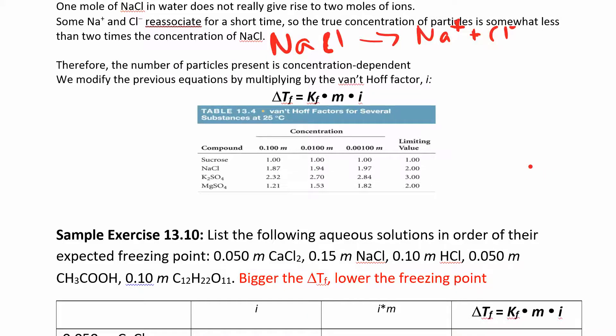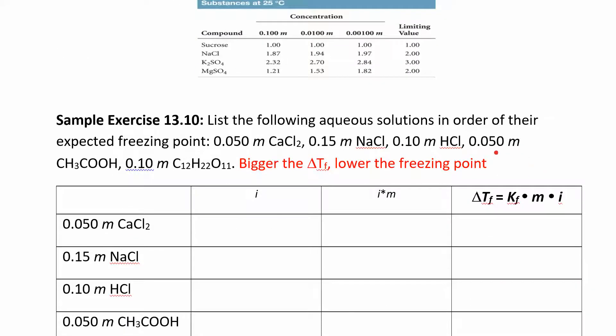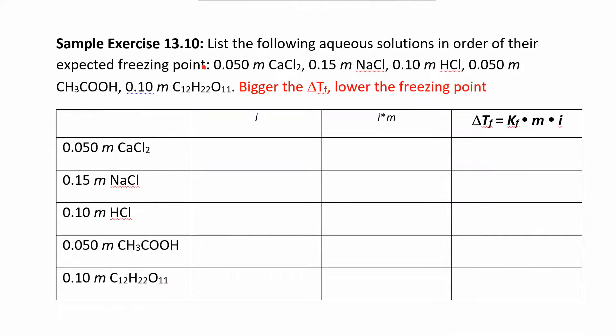So let's look at a couple of these and try to figure out how does this change the freezing point. So it says list the following aqueous solutions in order of their expected freezing point. So you can see you have different types of compounds. You have different molalities. And so you're looking at that relationship between what's the van't Hoff factor, how many particles does this thing dissociate into, and then what is the molality?